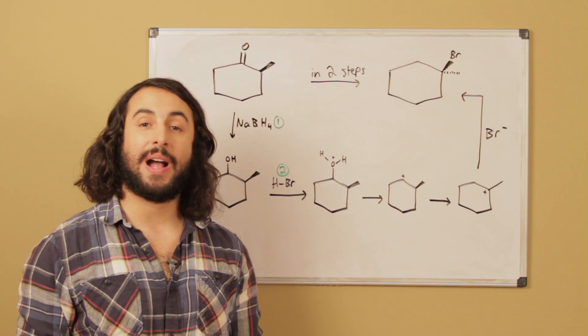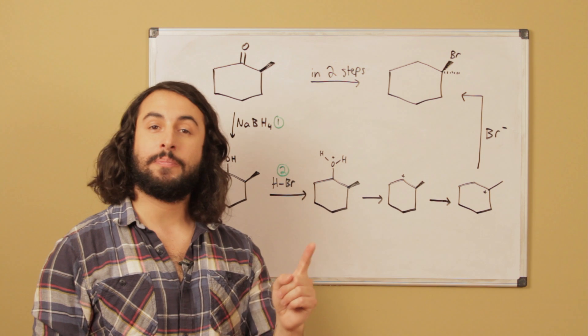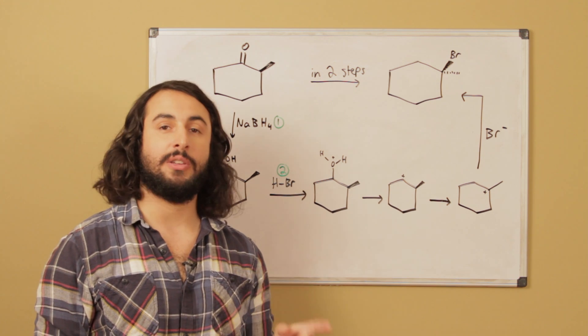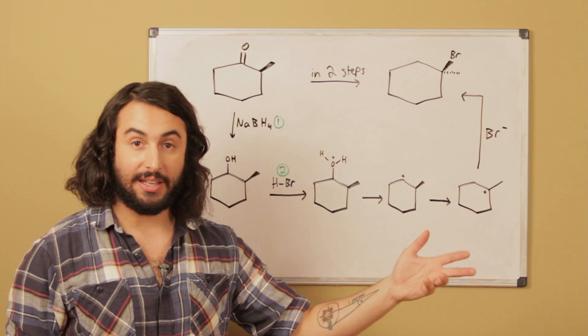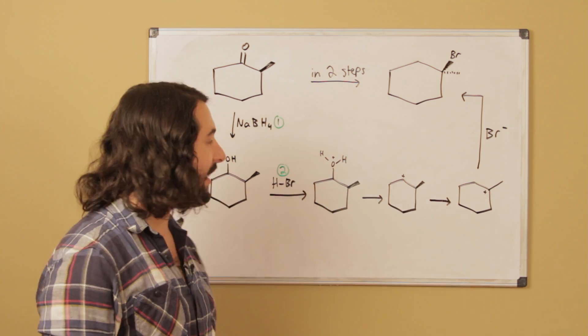Now one possibility that we might want to use is some strong acid to protonate that hydroxyl group and get it to leave as a water molecule. But then what we want to do is choose a strong acid selectively that might perform the other transformation that we also want to occur.